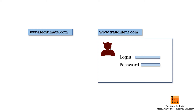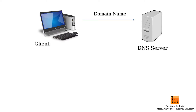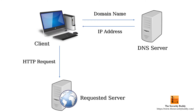How is farming done? When a user types a URL in the address bar of a browser, the domain name needs to be translated into an IP address before the computer can make a connection with the required server. Farming is often done by compromising the domain name resolution.